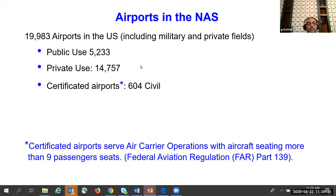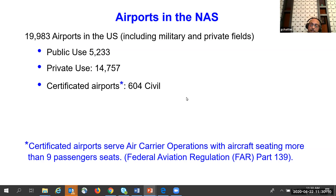There are about 20,000 airports in the US total, including military and private fields. Of these, about 5,000 are public use and approximately 15,000 are private use. About 604 certified airports can support air carrier operations — aircraft with more than nine passenger seats — under FAR Part 139 Operations.